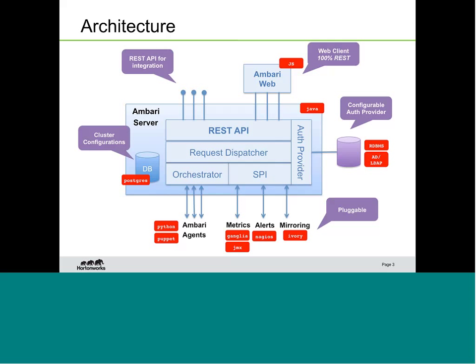The agent is written in Python. On the lower right corner is the SPI — Service Provider Interface — which makes modules pluggable so you can integrate with various metric providers. Ambari currently uses Ganglia and JMX to get metrics, but you could plug in something else. Similarly for alerts, Ambari uses Nagios by default but you could use something else. For HDFS mirroring capabilities, you can use Ivory or something similar.